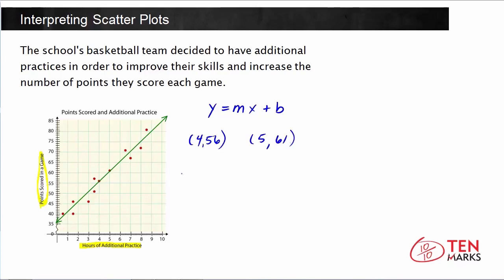So what you want to do is begin by finding the slope. And the slope is equal to the change in y over the change in x. So we can fill in some values. We have 61 minus 56 for the y values, and we're going to put that over 5 minus 4. 61 minus 56 is 5, and 5 minus 4 is 1. This means the slope of this line is 5.